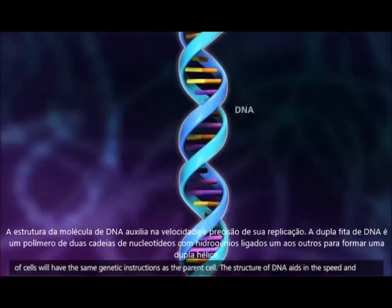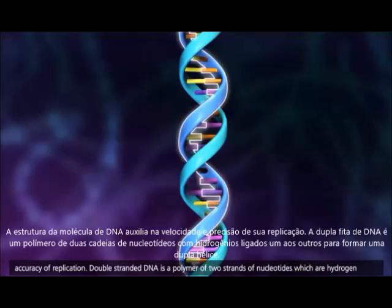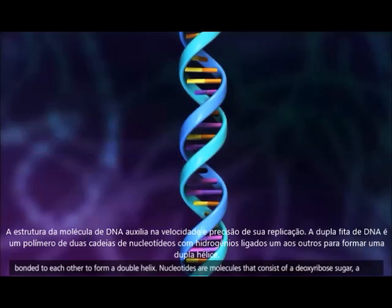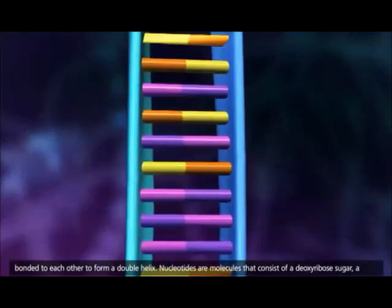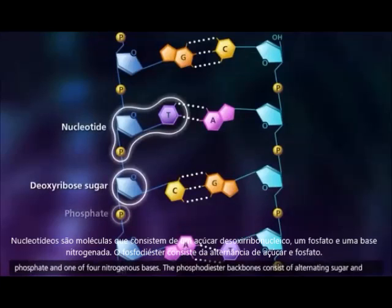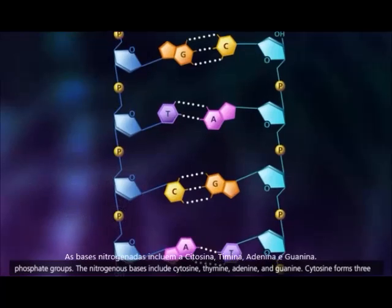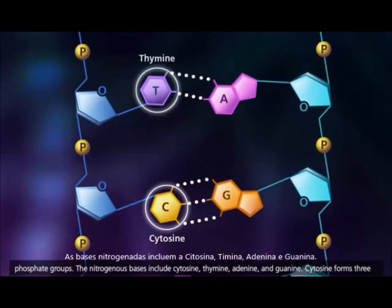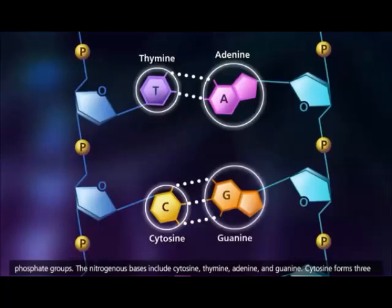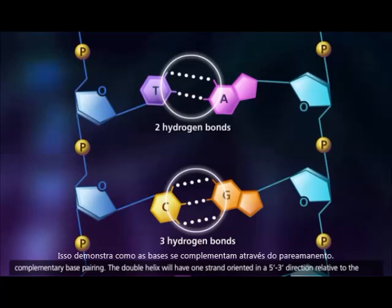The structure of DNA aids in the speed and accuracy of replication. Double-stranded DNA is a polymer of two strands of nucleotides, which are hydrogen bonded to each other to form a double helix. Nucleotides are molecules that consist of a deoxyribose sugar, a phosphate, and one of four nitrogenous bases. The phosphodiester backbones consist of alternating sugar and phosphate groups. The nitrogenous bases include cytosine, thymine, adenine, and guanine. Cytosine forms three hydrogen bonds with guanine, and thymine forms two hydrogen bonds with adenine. This is referred to as complementary base pairing.